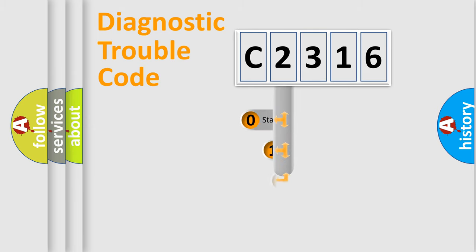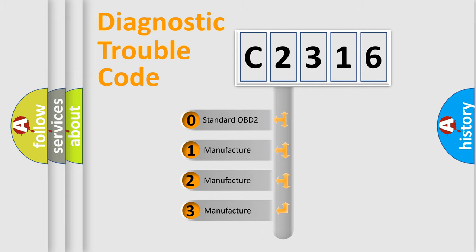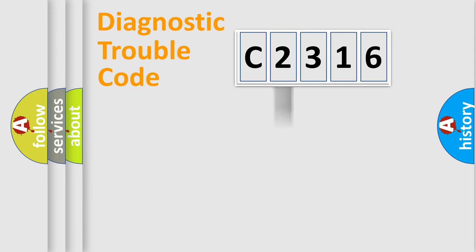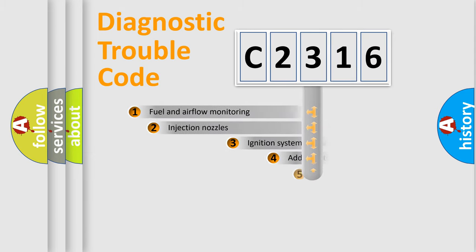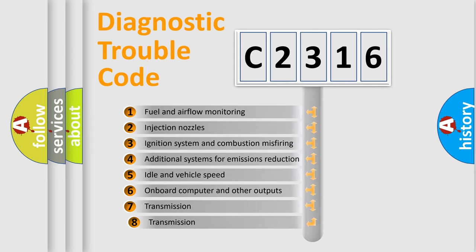This distribution is defined in the first character of the code. If the second character is expressed as zero, it is a standardized error. In the case of numbers 1, 2, or 3, it is a manufacturer-specific expression of a car-specific error.